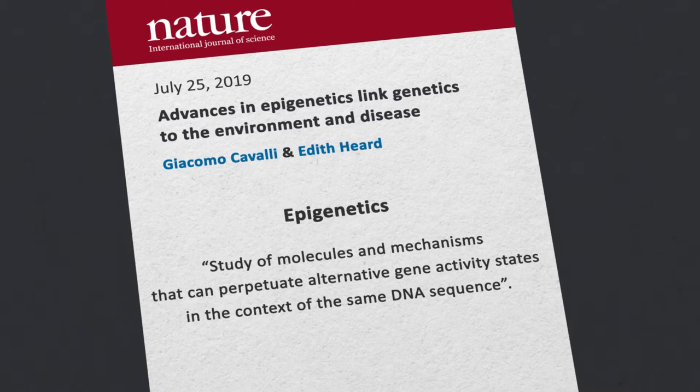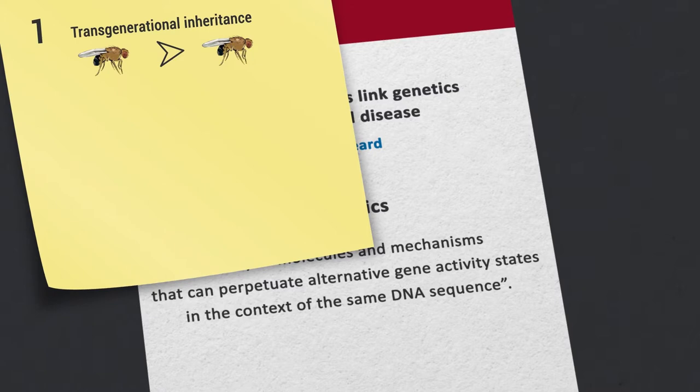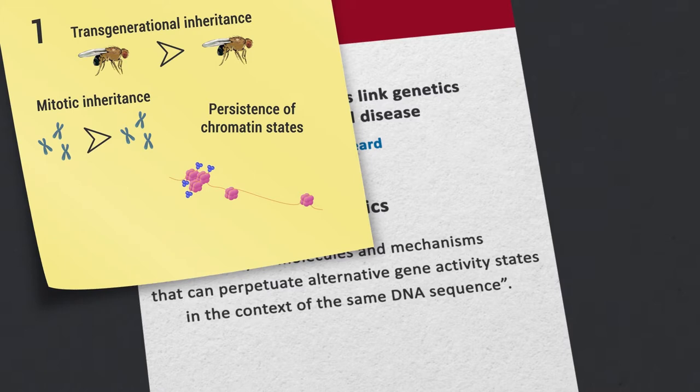This operational definition has several implications. Firstly, it encompasses transgenerational inheritance as well as mitotic inheritance and persistence of chromatin states throughout extended periods of time, even without cell division — for instance in long-lived post-meiotic cells like adult neurons.